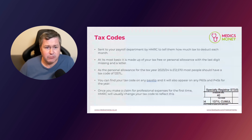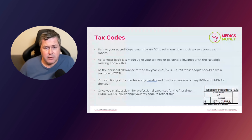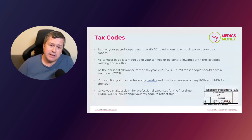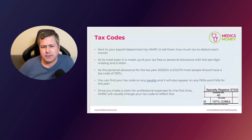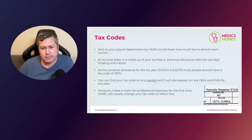You can see on screen an example of someone who has claimed their GMC, Royal College, and BMA fees worth £1,140. That's resulted in a higher tax code, meaning that doctor is now getting a little bit extra tax relief each month — paying a little less income tax than they would on 1257L — so that HMRC can give them tax relief on employment expenses every month. So check your tax code, and if it is 1257L, think about whether you have allowable employment expenses. By making a claim, you should not only get a tax rebate, but HMRC will change your tax code going forward so you don't have to keep claiming each time.